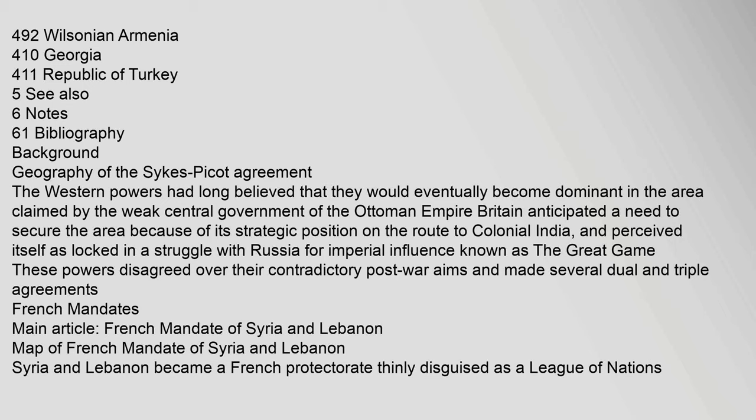Background: Geography of the Sykes-Picot Agreement. The Western powers had long believed that they would eventually become dominant in the area claimed by the weak central government of the Ottoman Empire. Britain anticipated a need to secure the area because of its strategic position on the route to colonial India, and perceived itself as locked in a struggle with Russia for imperial influence known as the Great Game. These powers disagreed over their contradictory post-war aims and made several dual and triple agreements. Syria and Lebanon became a French protectorate, thinly disguised as a League of Nations Mandate.